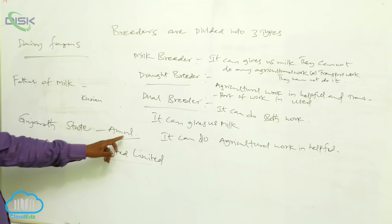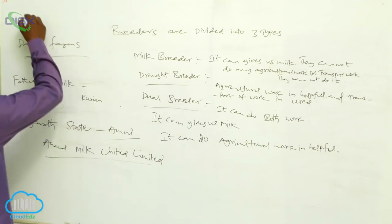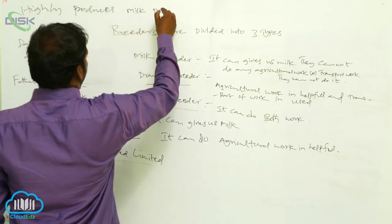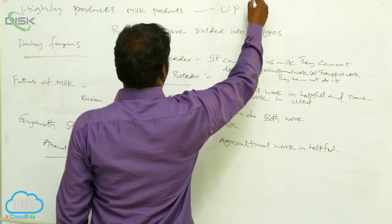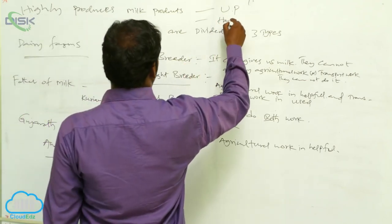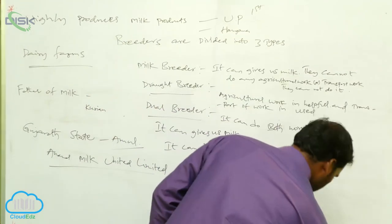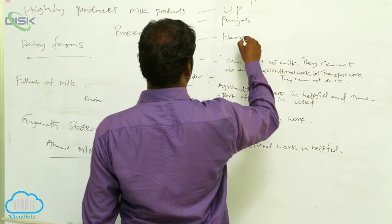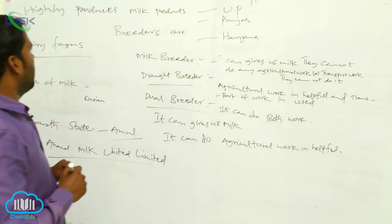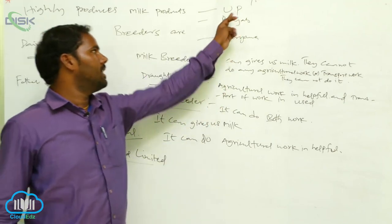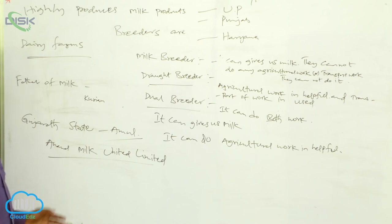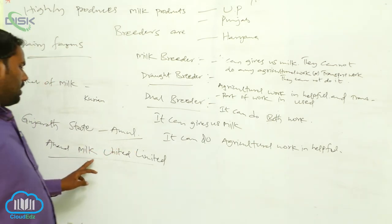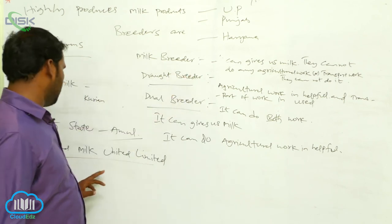Amul is the first brand, but the highest milk-producing state in our country is Uttar Pradesh (U.P.) in first place. Second place is Punjab, and third place is Haryana. The best milk products are exported from Gujarat State through the Amul Brand — Anand Milk United Limited. This is the comparison of variation between milk products across these states.